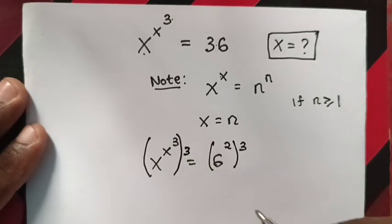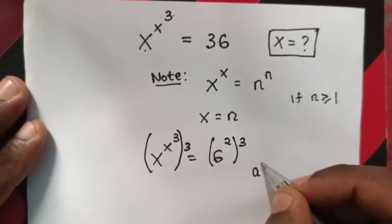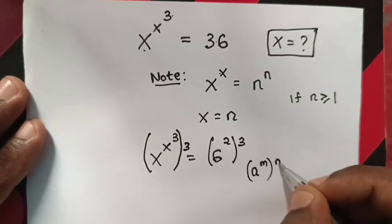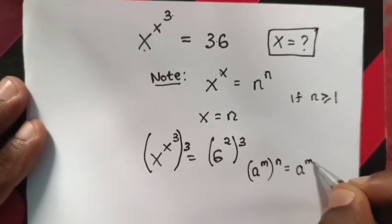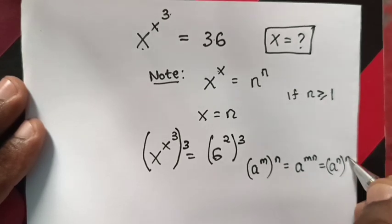We will apply the exponential rule that (a^m)^n equals a^(mn), which equals (a^n)^m.